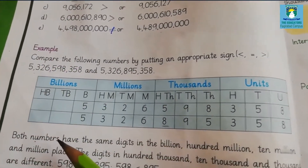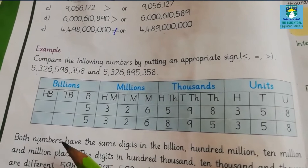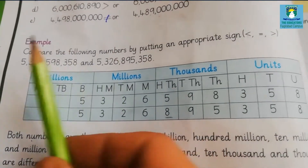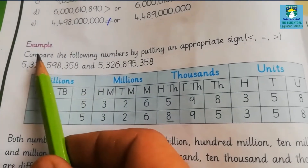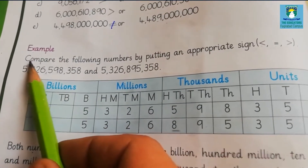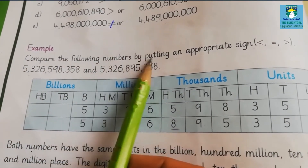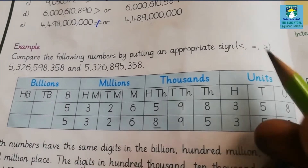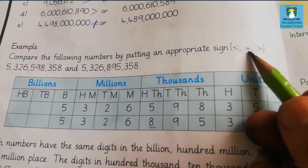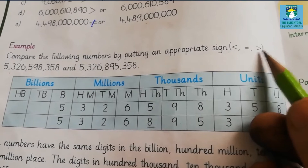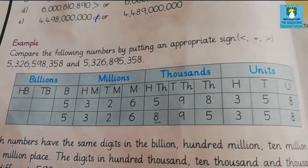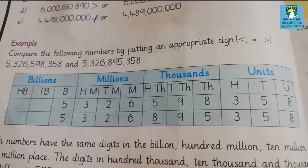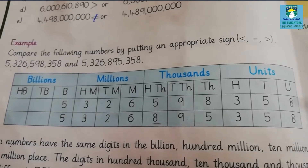Before solving Exercise 5, first we will do the example in the book. Here is the example: compare the following numbers by putting an appropriate sign — less than, equal, or greater than. There are two values and we have to compare these two values.